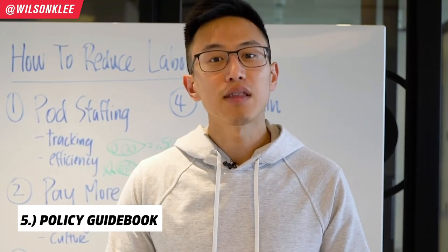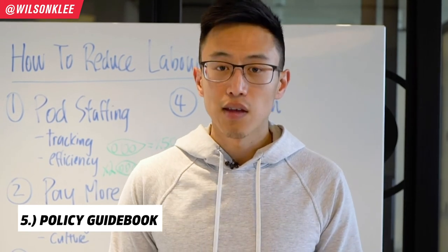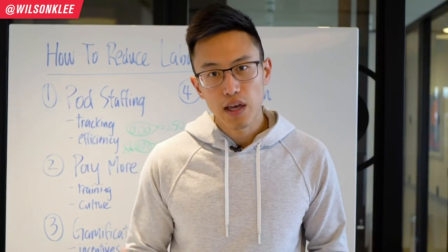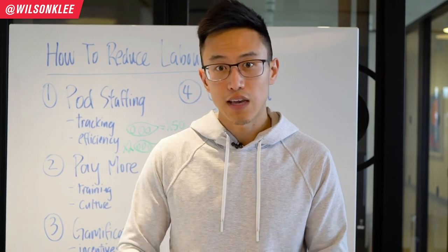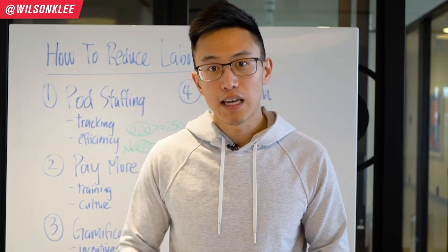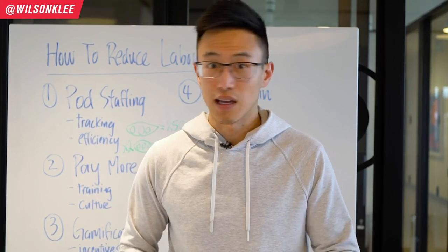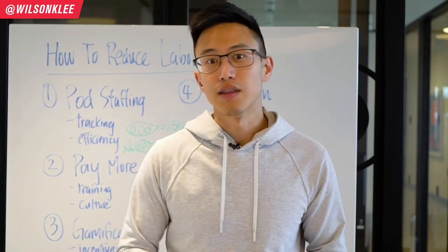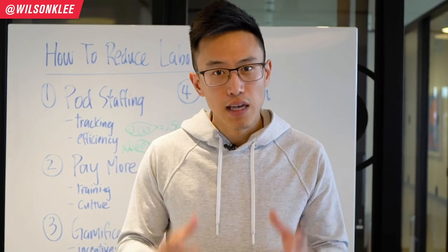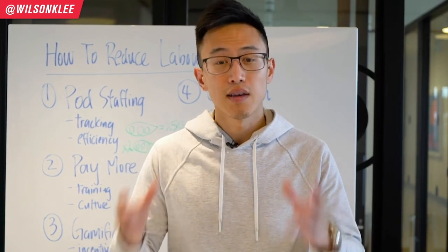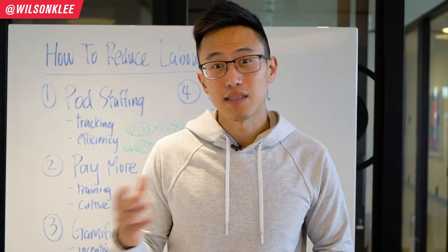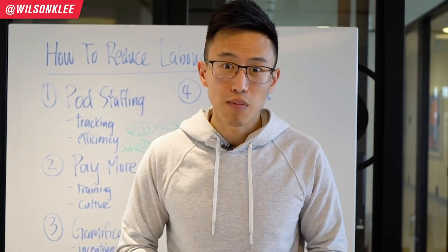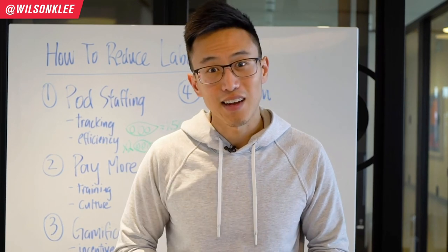Number five is the policy guidebook — having the right expectations from the get-go is super important because there's no argument; it's either right or wrong. The clock-in clock-out policy alone can save you hours of labor costs within the year. Every single dollar you save in labor is direct profit into your pocket. In the restaurant industry, we're playing with 5 to 10% margins, so that 1, 2, or even 3% saved on labor could very well be that vacation with your family.